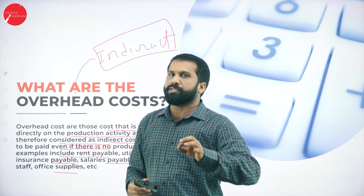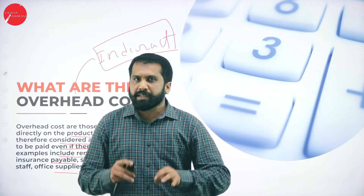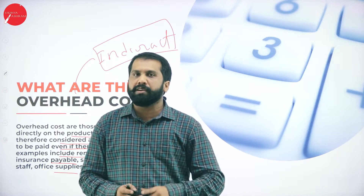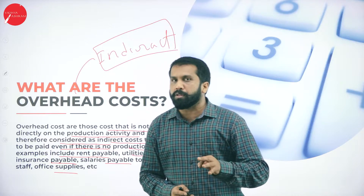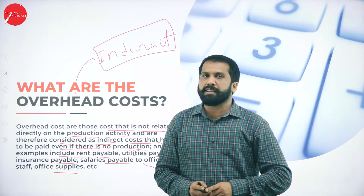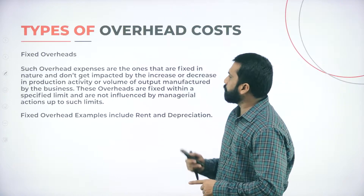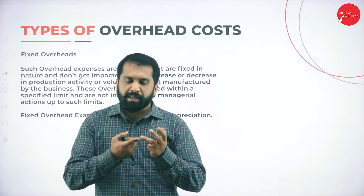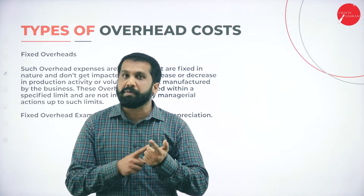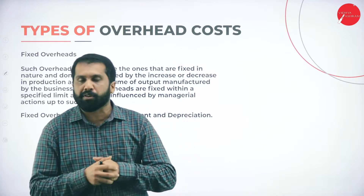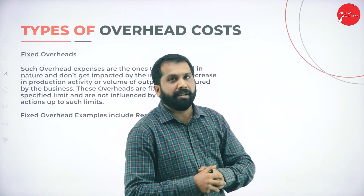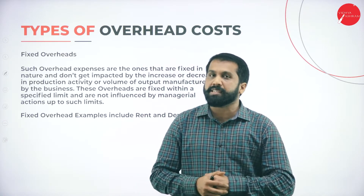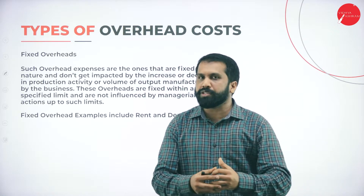In the examination they will not ask you what is overhead or to give examples — that has never been asked. You are only supposed to do problems, and I will tell you what kind of theory they will ask under overhead. Now, under overhead we have three types: fixed overhead, variable overhead, and semi-variable. I already explained these while doing the cost sheet, so I'll just briefly cover them. As I told you, I am running tuition classes.